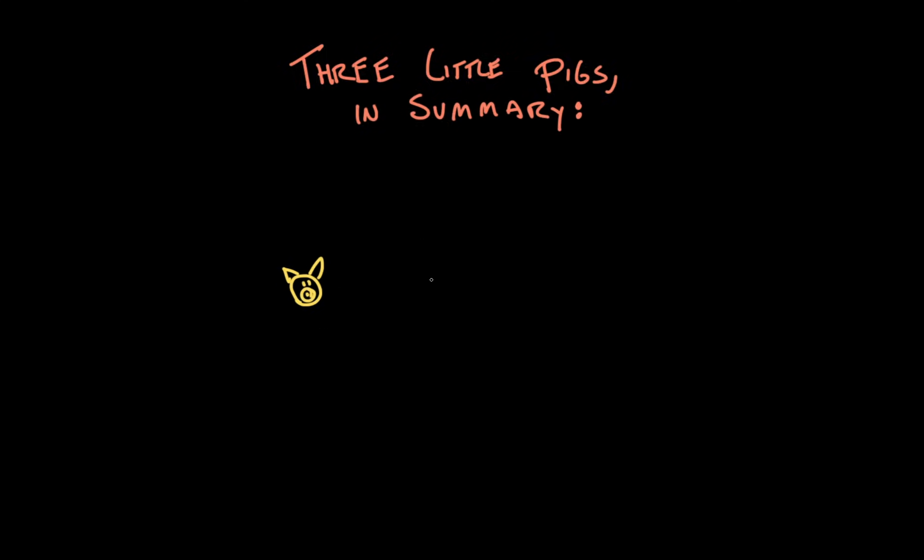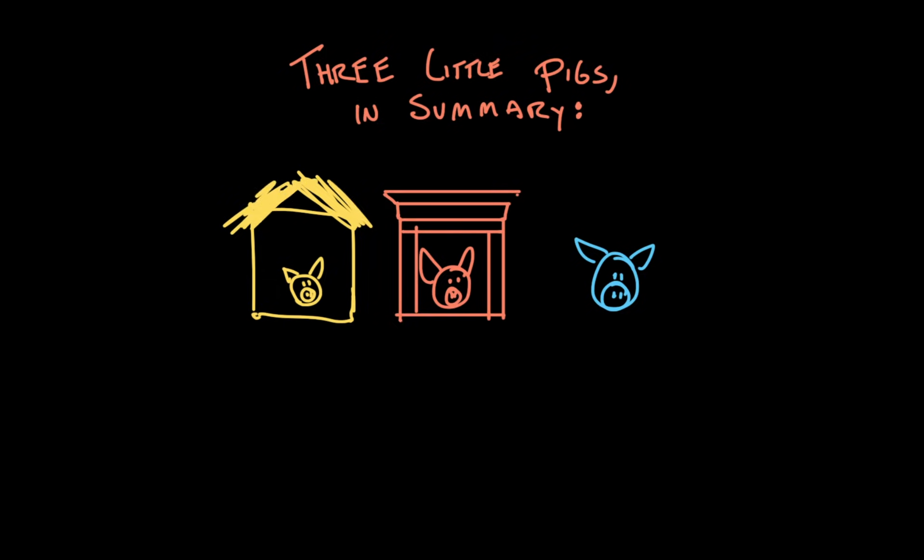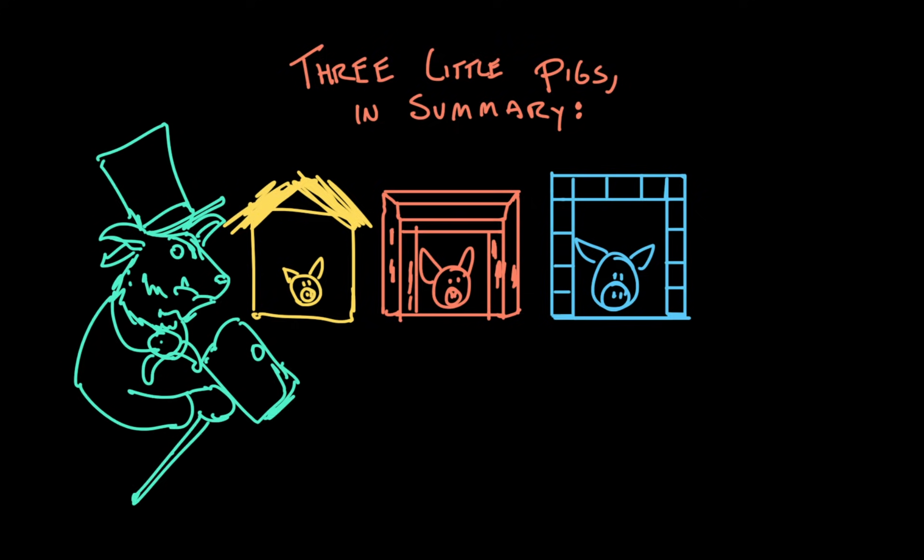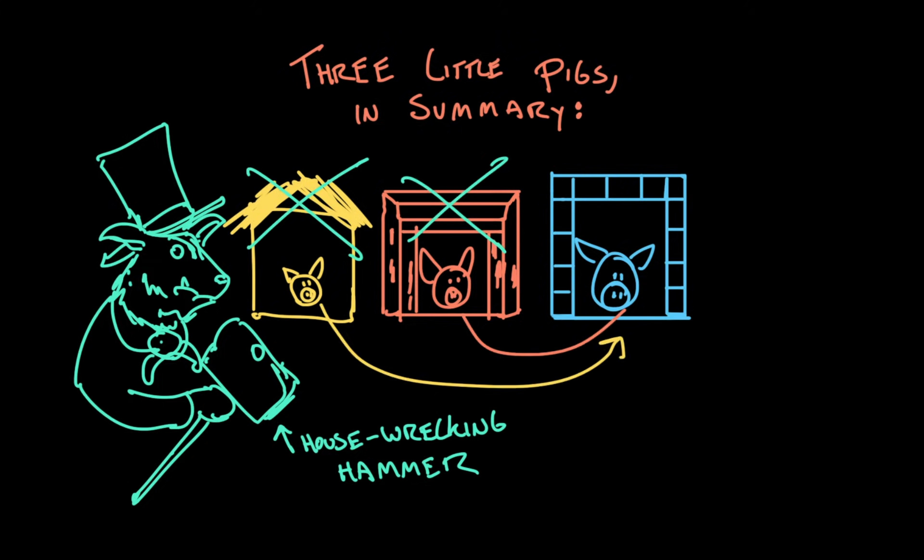Three little pigs live in houses that they built. One used straw, one used wood, and the third pig, who worked hardest of all, built a brick house. Along comes a big bad wolf, pictured here with a big bad top hat and a big bad house wrecking hammer. And he successfully knocks down the first two houses in order to eat the pigs inside. But they escape to the brick house, which the wolf is unable to knock down.